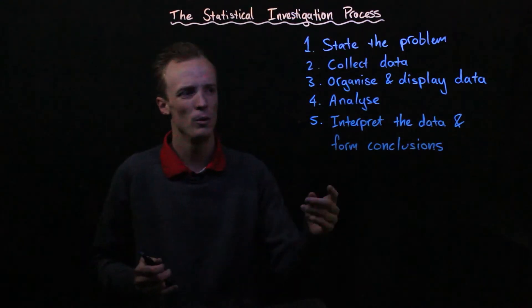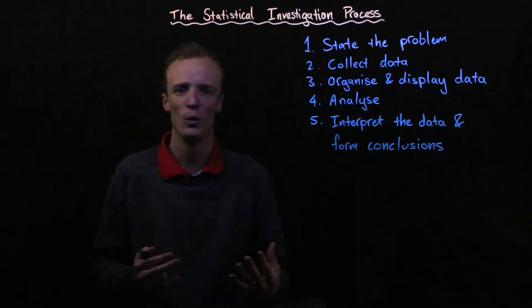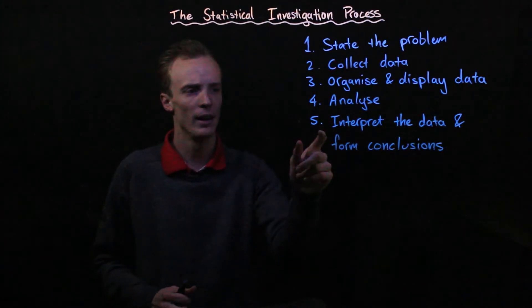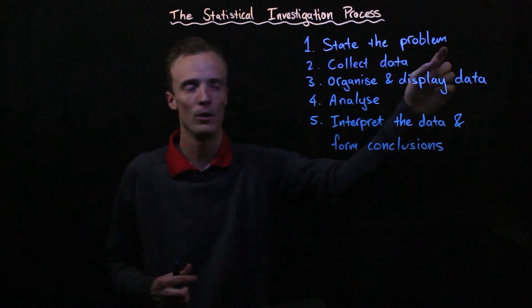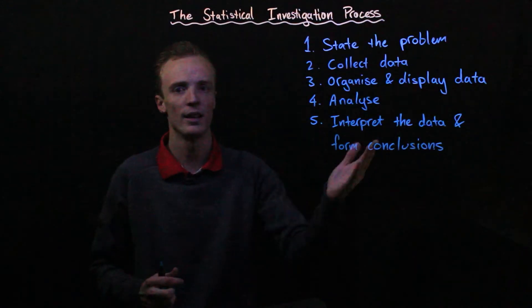Now in the fourth step what we're actually doing is analyzing what kind of patterns or correlations may exist. It's in the fifth step that we relate these, what we found in the fourth step, back to the problem itself. What does that mean in context to our problem?